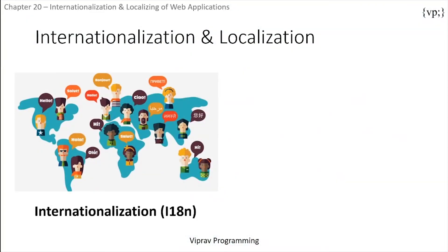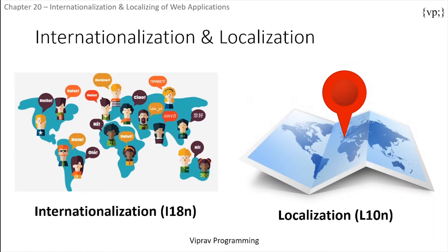Internationalization is the process of preparing an application to support more than one language or data format, while localization is the process of adapting an internationalized web application to a specific locale or region. To simplify: an internationalized website is basically like a template, where some things are universal and some things that differ by country are localized.